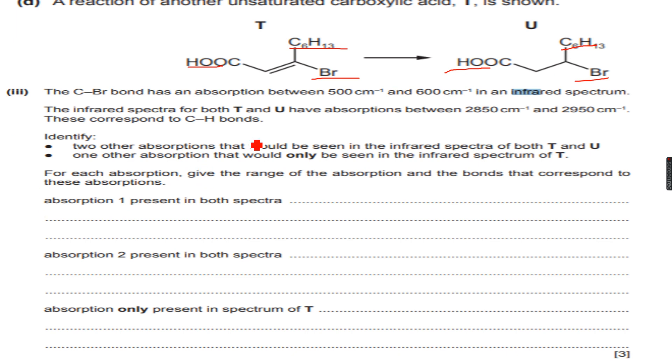The C-Br bond has an absorption between 500 per centimeter and 600 per centimeter in an infrared spectrum. The infrared spectrum for both T and U have absorptions between 2850 per centimeter and 2950 per centimeter. These correspond to CH bonds. Identify two other absorptions that would be seen in the infrared spectrum of both T and U